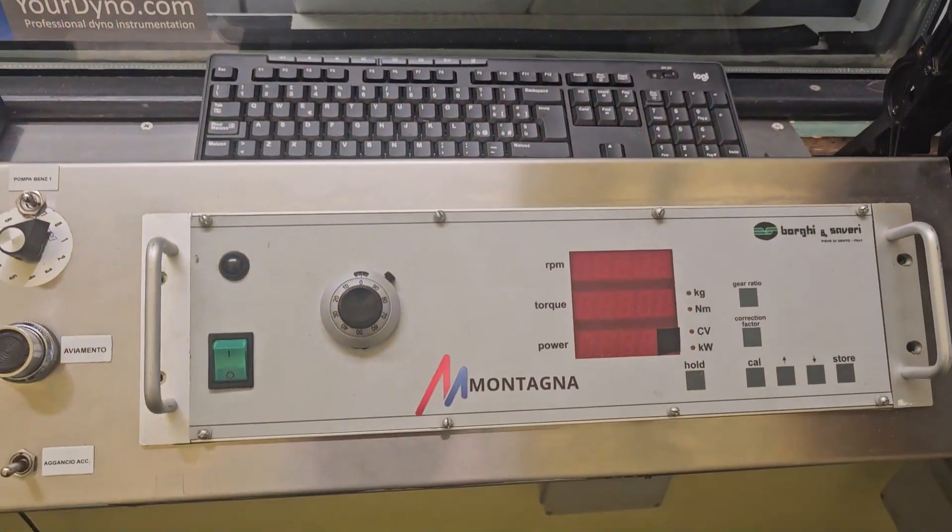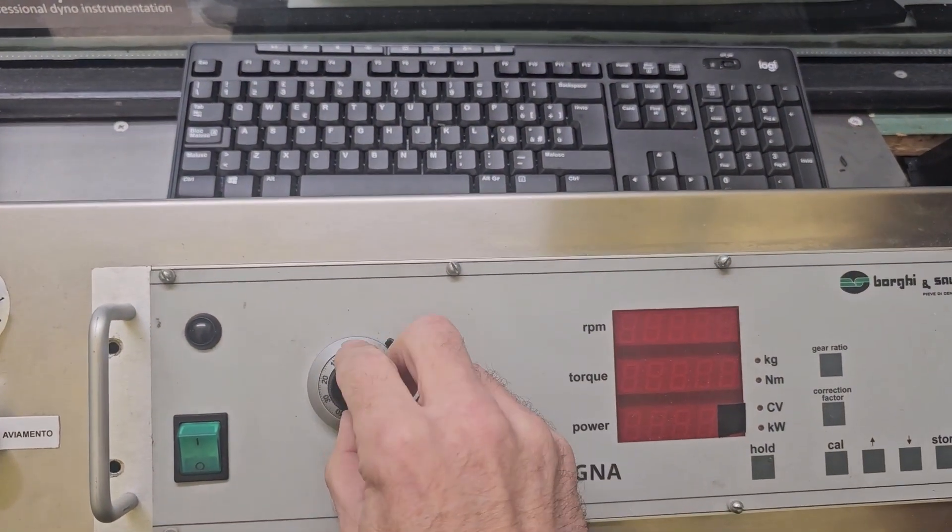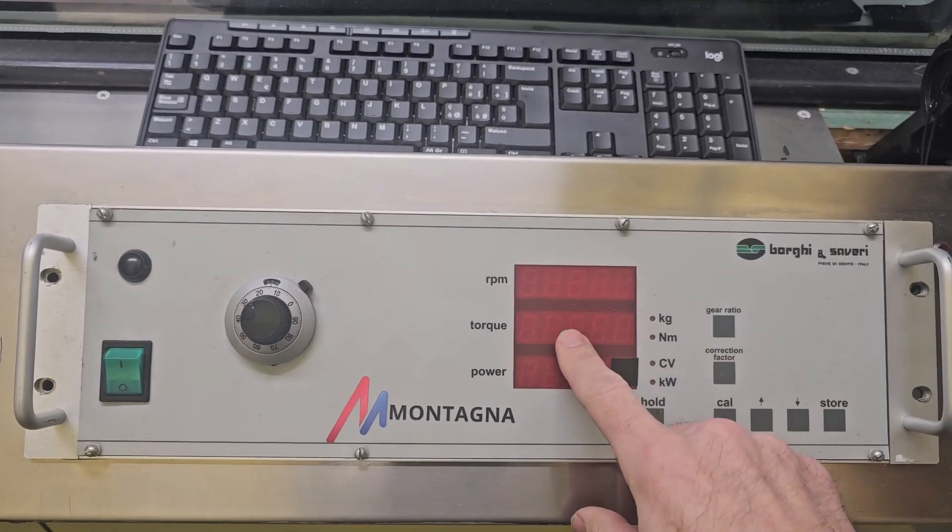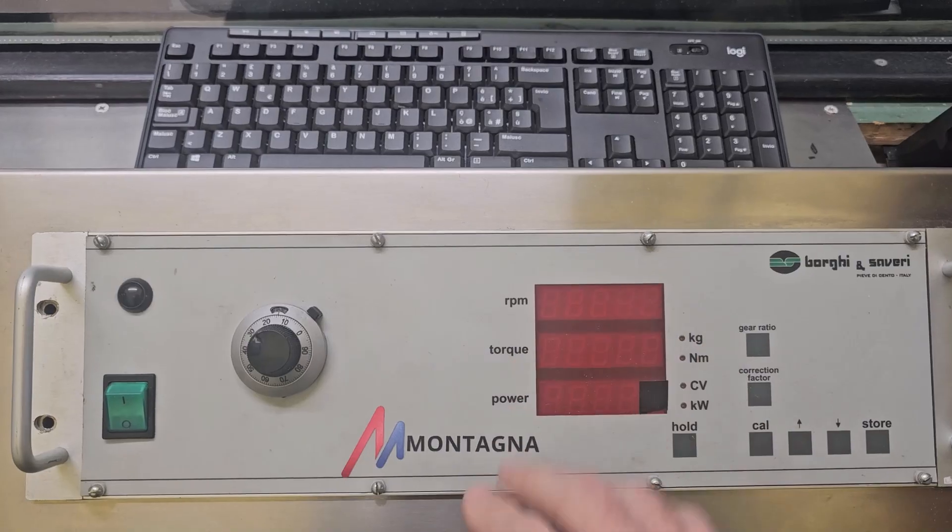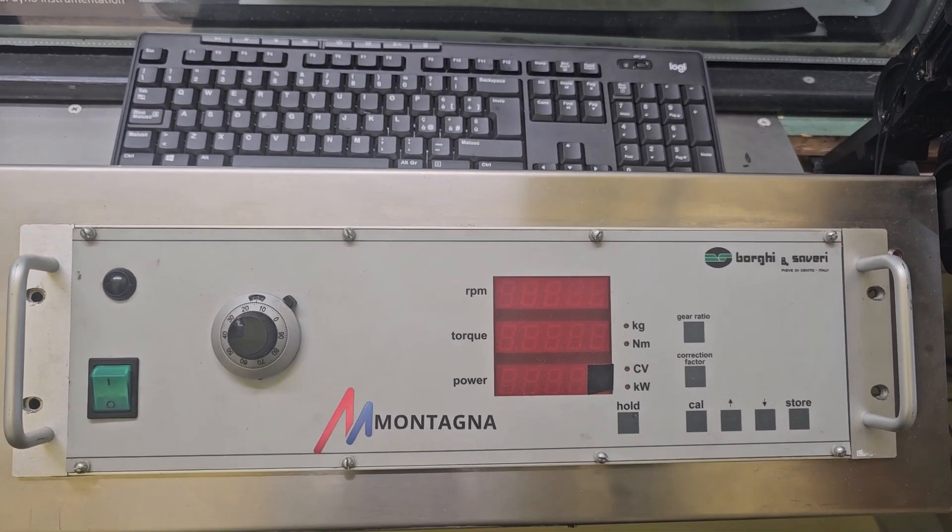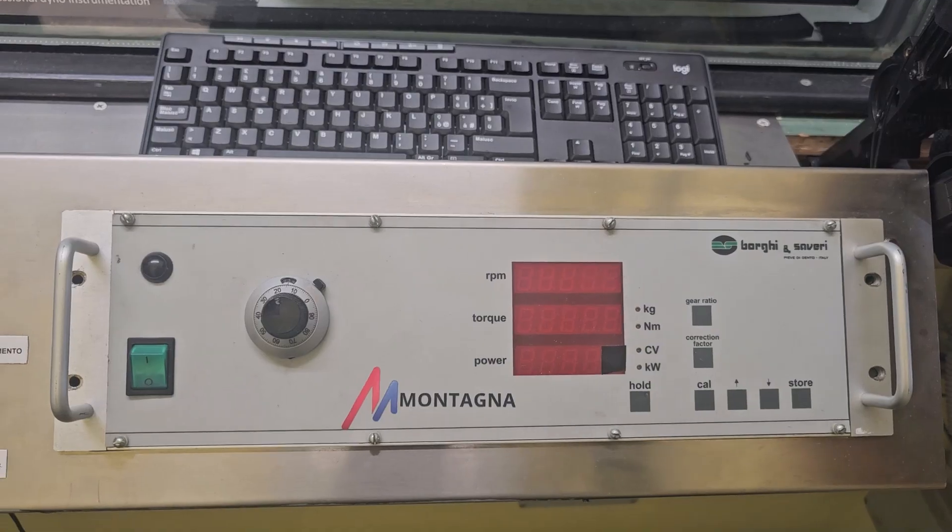Just to compare what they had before. So this is the old Borg and Savary. They changed the rpm here. That's how they regulated it. And they watched the rpm and torque and power here. So no data acquisition at all with a PC. Just this was all they saw.